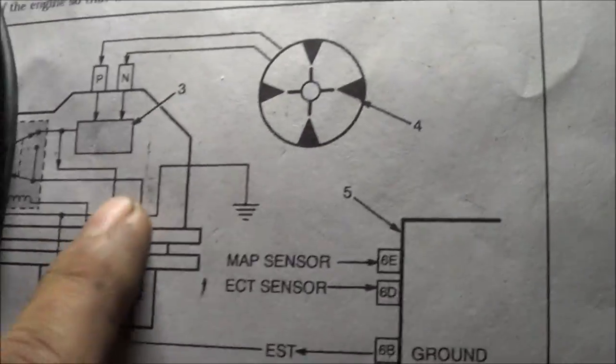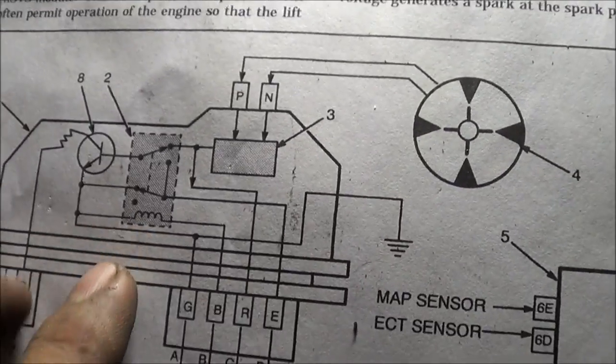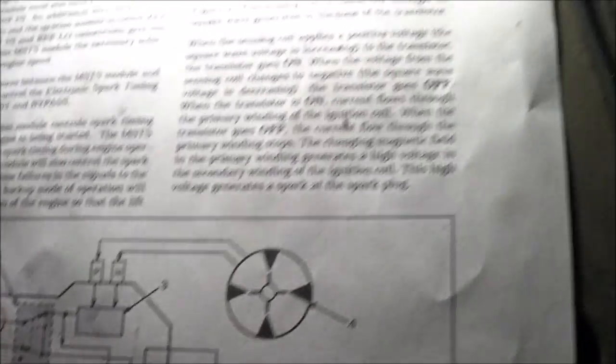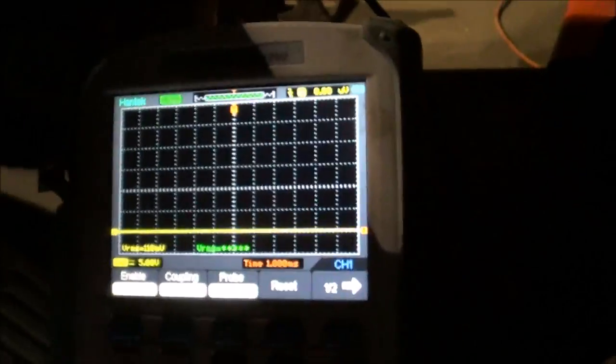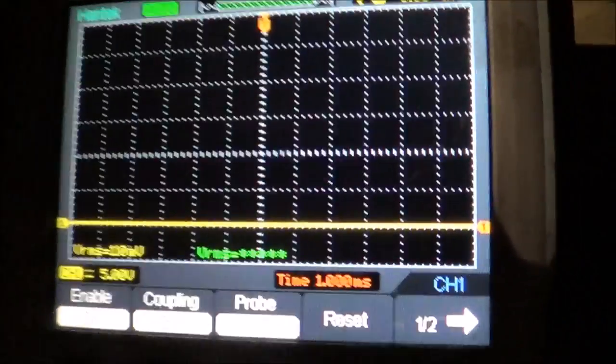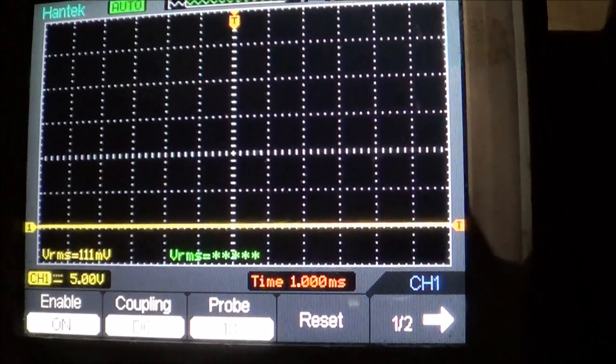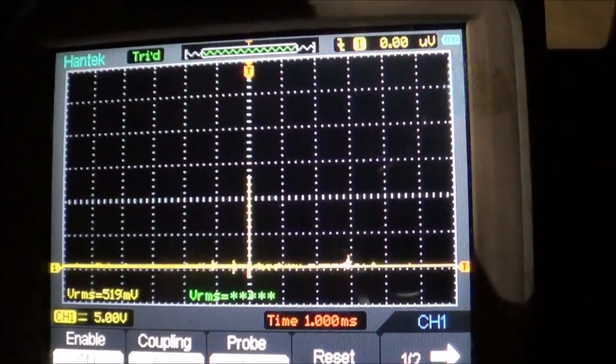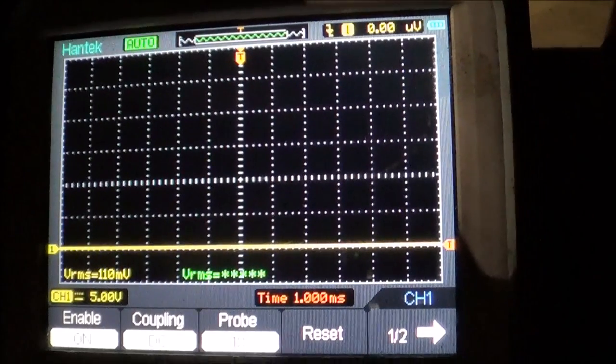If it goes up to 5 volts, I know if my ignition module is working as it's supposed to, then I wouldn't have any spark. So I'll let you see right now while I crank it. Focus on the oscilloscope.